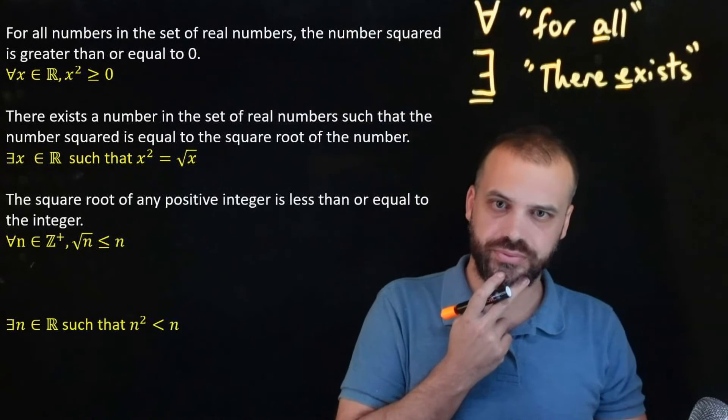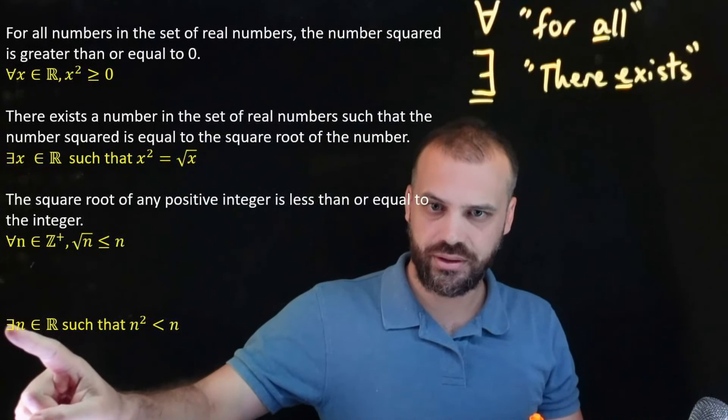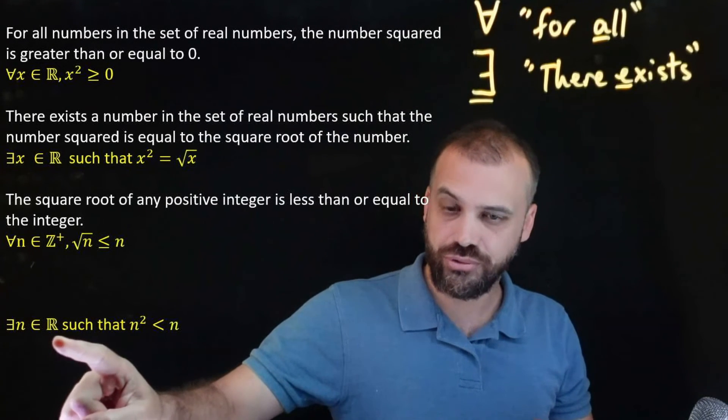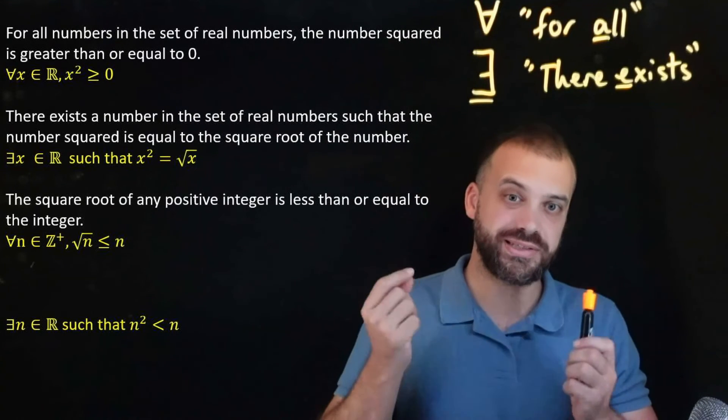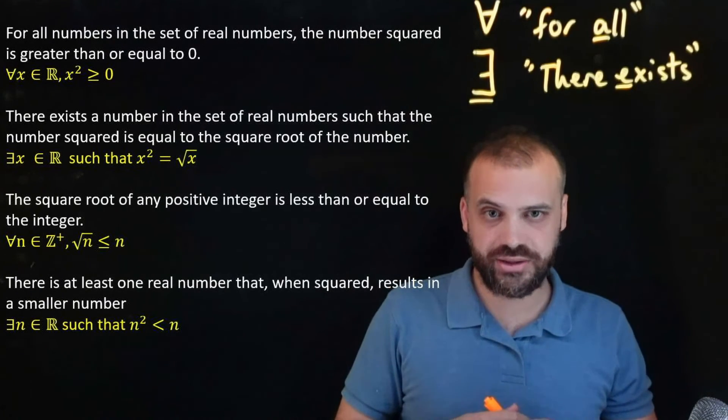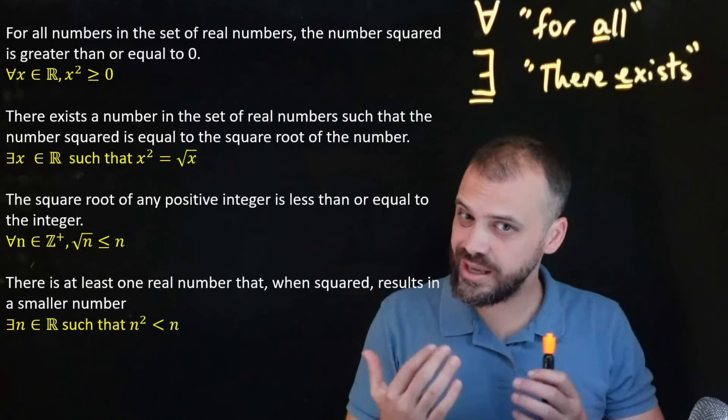What else have we got? There exists a number in the set of real numbers such that n squared is less than n. Again we're using that 'such that' there for clarity. Maybe you don't need it.